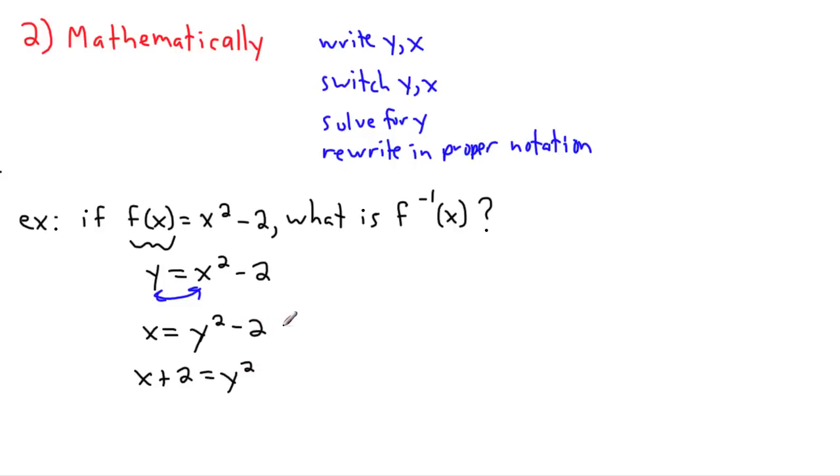Because if I do minus 2 and plus 2 on both sides, that'll get rid of this and put it over here. So y² = x + 2, I'm almost done. But now I want to get y by itself. I want to do the opposite of y².